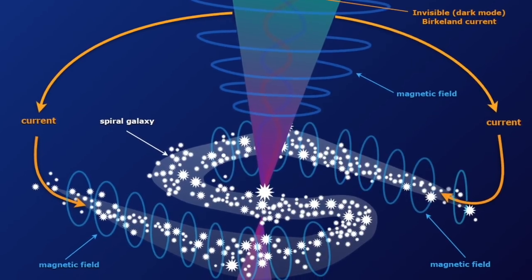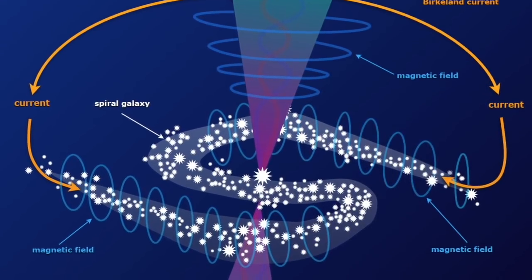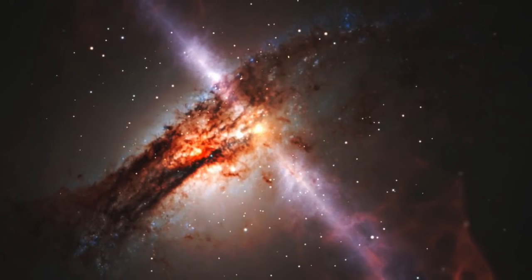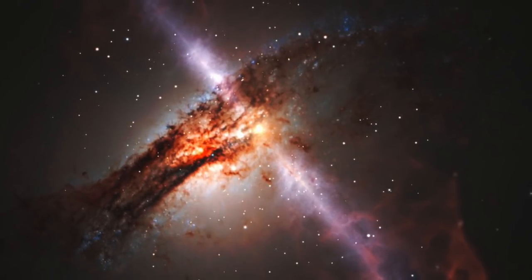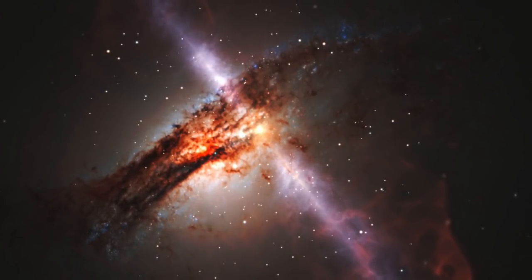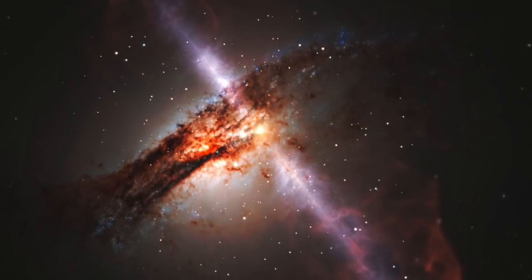The plasmoid concentrates and stores energy and is connected to a larger network of electric currents. When the plasmoid reaches a threshold density, it discharges, usually along a galaxy's spin axis. This is in fact the source of stupendous galactic jets.